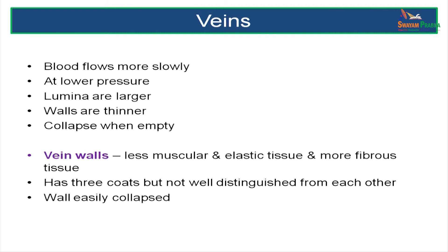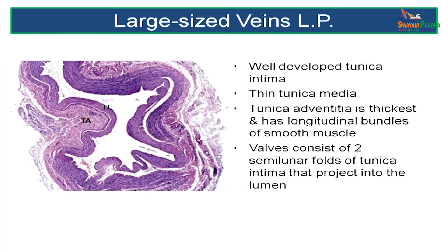Now let us study veins. Veins are larger vessels with thinner walls, having a collapsed lumen and blood at lower pressure. The vein walls have less muscle and more connective tissue. The tunica media of a vein is much thinner than that of an artery, while the tunica adventitia is more developed than in the arterial wall. In a slide of a large sized vein, note the collapsed state of its wall with a thin tunica media and a very thick tunica adventitia. The tunica adventitia has longitudinal bundles of smooth muscle.